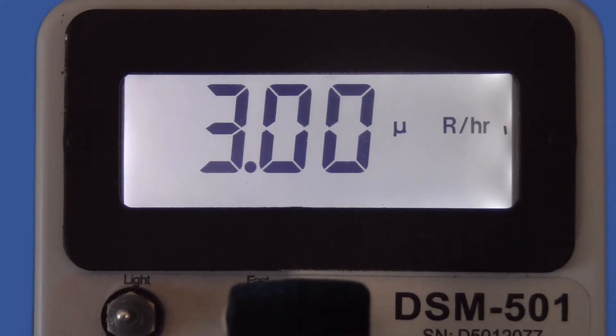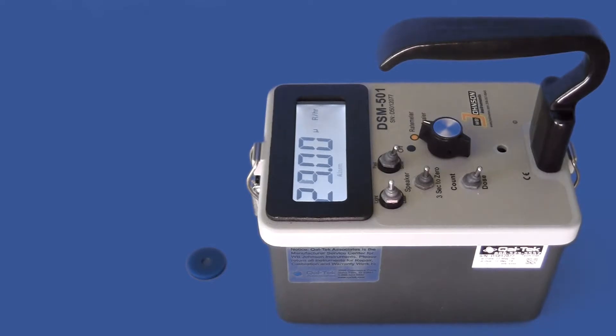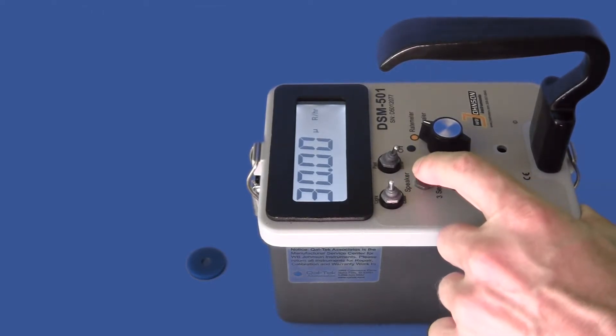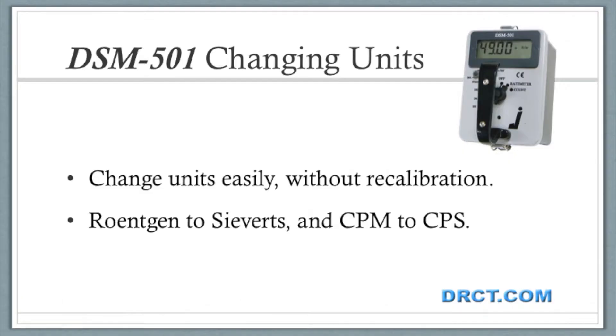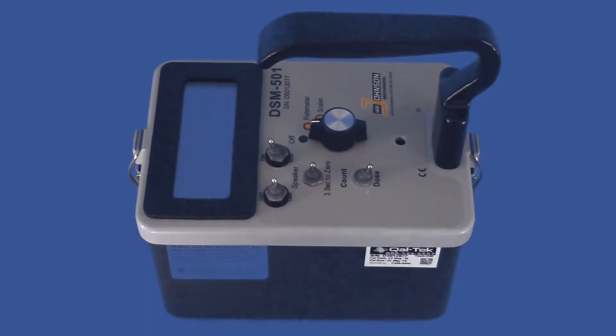We can change units easily and without recalibration. International users may change Roentgen to Sieverts and counts per minute, CPM, to counts per second, CPS. First, we open up the meter again.